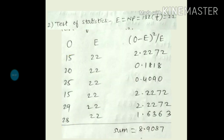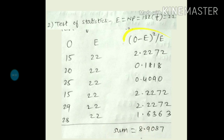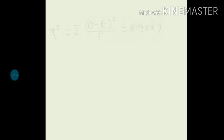Observed frequency is given; expected frequency will be the same (22) for all, because probability is same. The formula for chi-square distribution is summation of (O minus E) squared upon E. First: 15 minus 22 equals minus 7; its square is 49; divide by E which is 22 — first value is 49 upon 22. Similarly find the remaining values. Lastly find the summation — that is the required chi-square, which is 8.91.